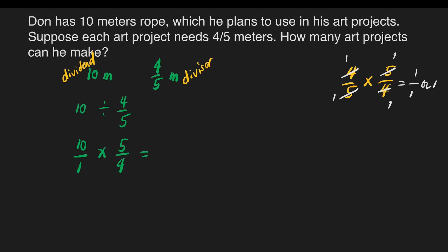We proceed to multiplication. Is there something we can cancel? Yes — 10 and 4. What number can divide both? That's 2. So 10 divided by 2 is 5, and 4 divided by 2 is 2. We multiply: 5 times 5 is equal to 25, and 1 times 2 is equal to 2. Our answer is an improper fraction.